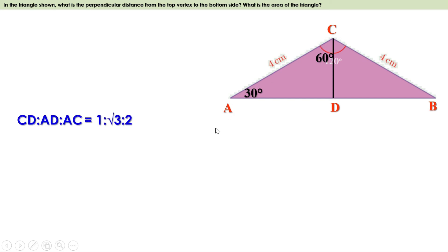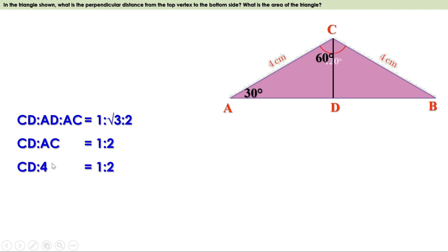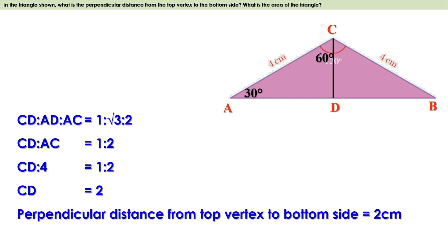Therefore CD:AD:AC = 1:√3:2. To find CD, take the ratio CD:AC = 1:2. Since AC = 4, replacing: CD/4 = 1/2, so CD × 2 = 4 × 1, giving CD = 2 cm. The perpendicular distance from the top vertex to the bottom side is 2 cm.